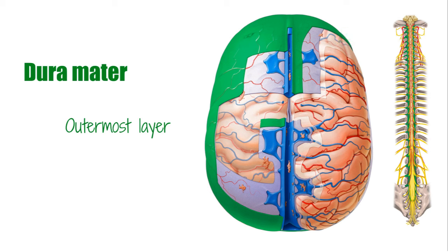The meninges protect the brain and the spinal cord and their accompanying blood vessels. They also enable the channeling of cerebrospinal fluid around the brain and the spinal cord.